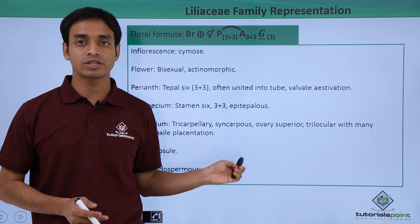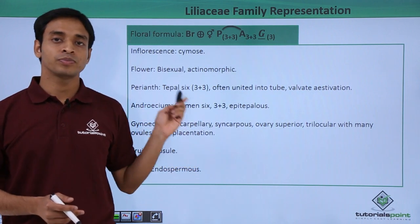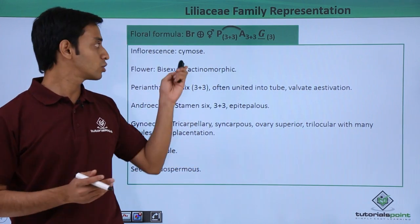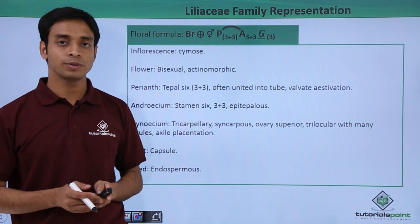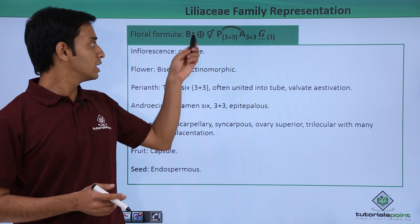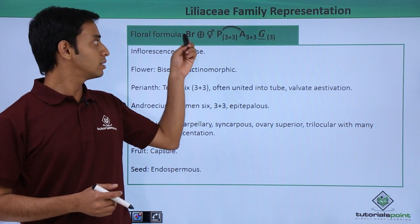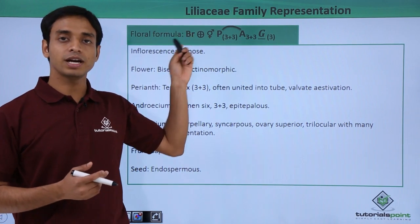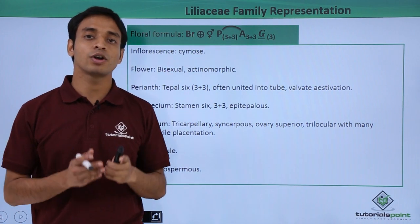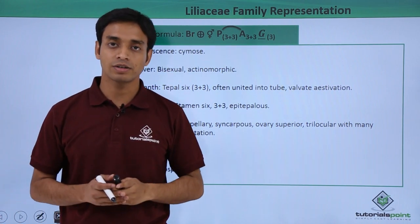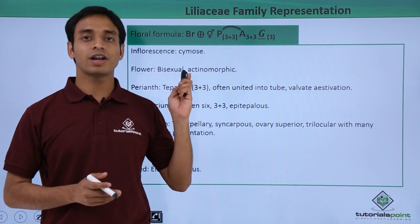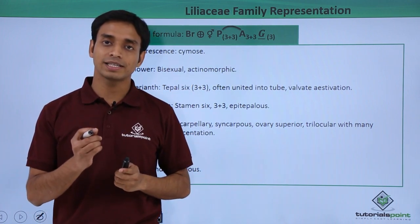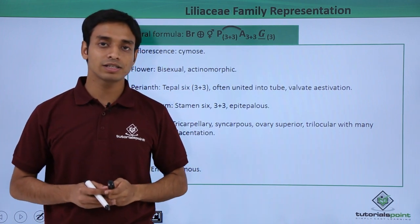The inflorescence type here is mostly cymose. It is represented by the letter BR — BR stands for bractate flowers. These flowers have the presence of bracts, that is small leaf-like structures at the base of the pedicel.